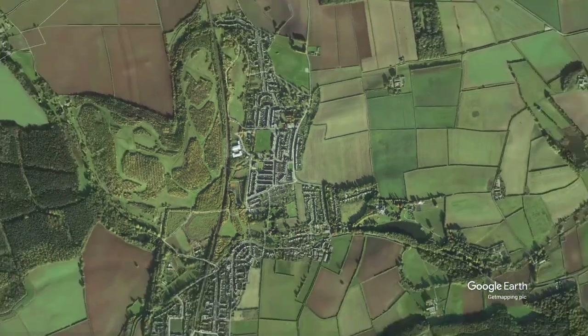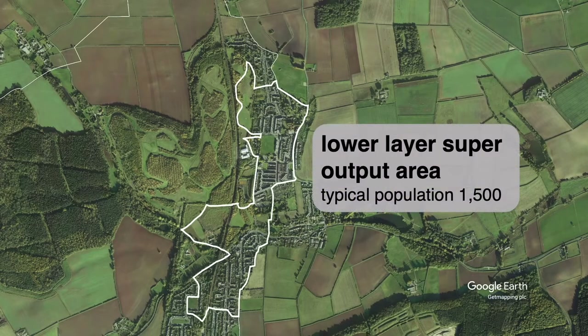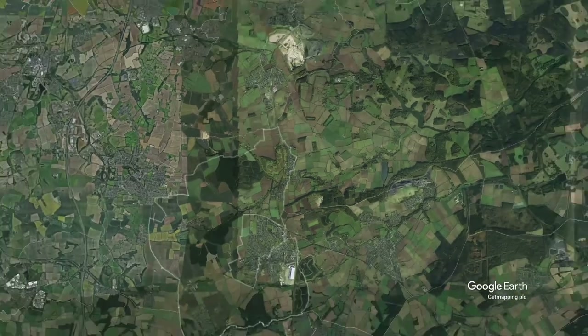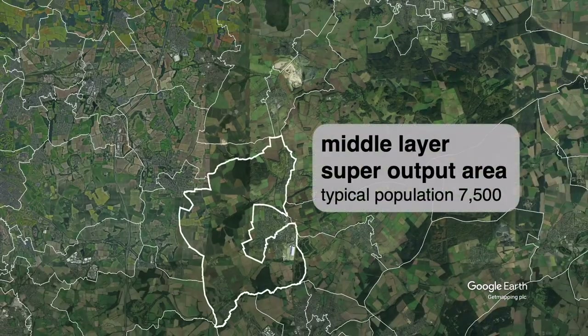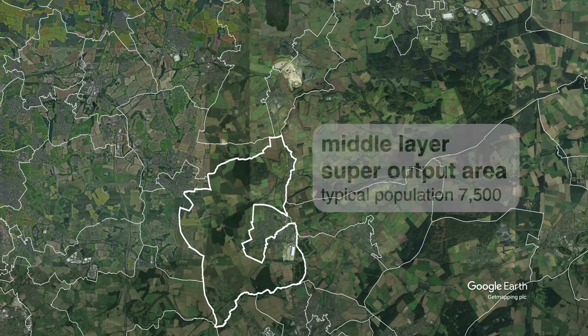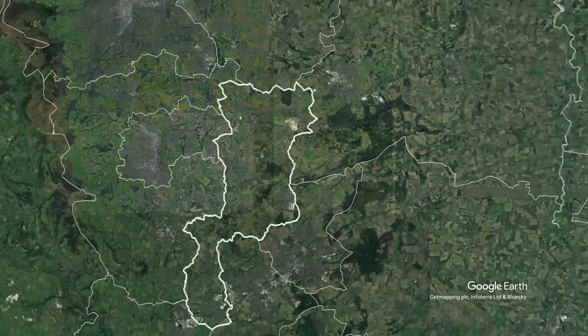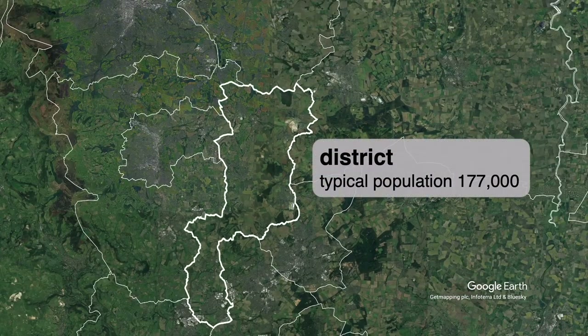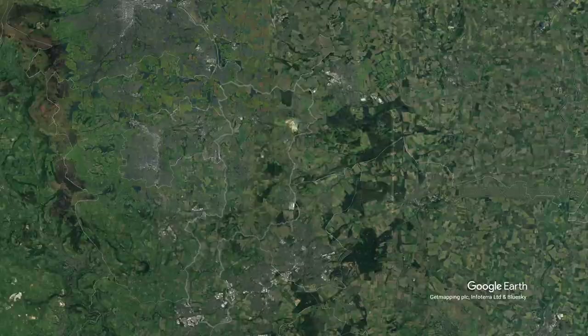Output areas are aggregated up to the lower layer super output area, more often known as LSOAs, which are slightly larger. They are then aggregated up again to middle layer super output areas, or MSOAs, which are about the same size as wards. MSOAs can then be aggregated up to district level, above which you can use the administrative hierarchy. There are equivalents to this system in many other countries. Whenever we're thinking about these local areas, we need to remember that they are to some extent arbitrary, because they've been defined for either statistical or administrative convenience.